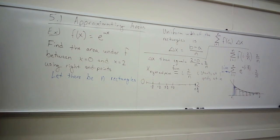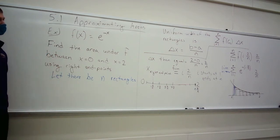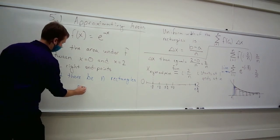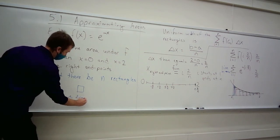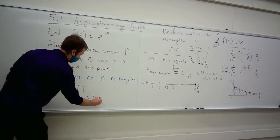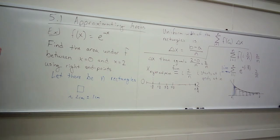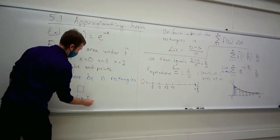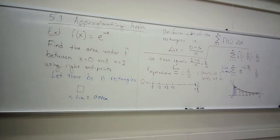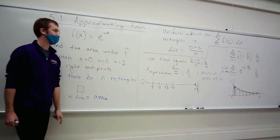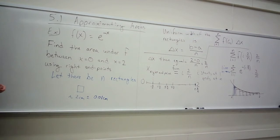How many rectangles should you use? It depends on how close to the actual area you want to be — your tolerance. Like a machinist: if you need a part accurate to ±0.1 cm, that's easy. But if you need laser precision, that requires more. The number of rectangles you choose depends on how accurate you need to be, and which endpoint you choose also depends on the function.